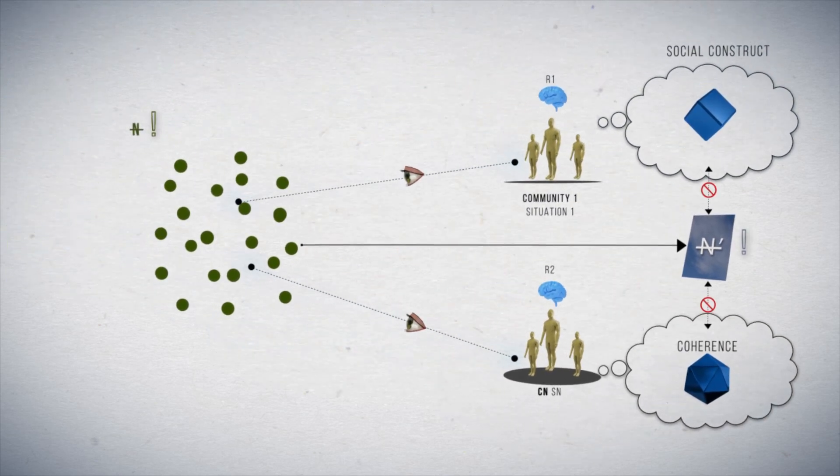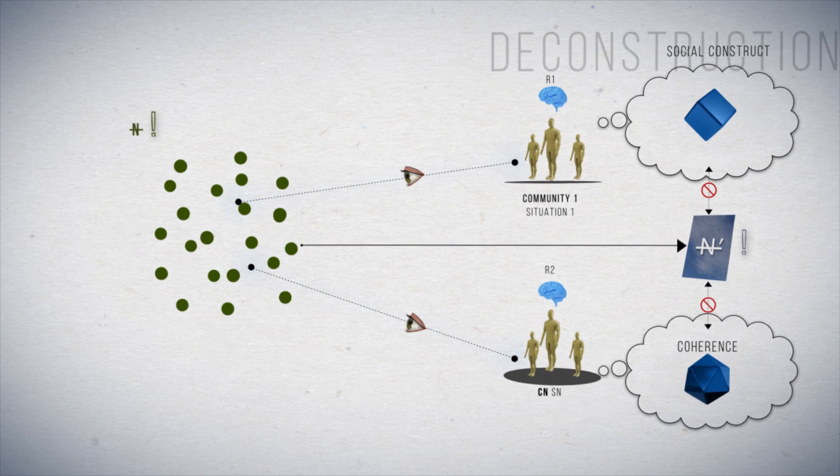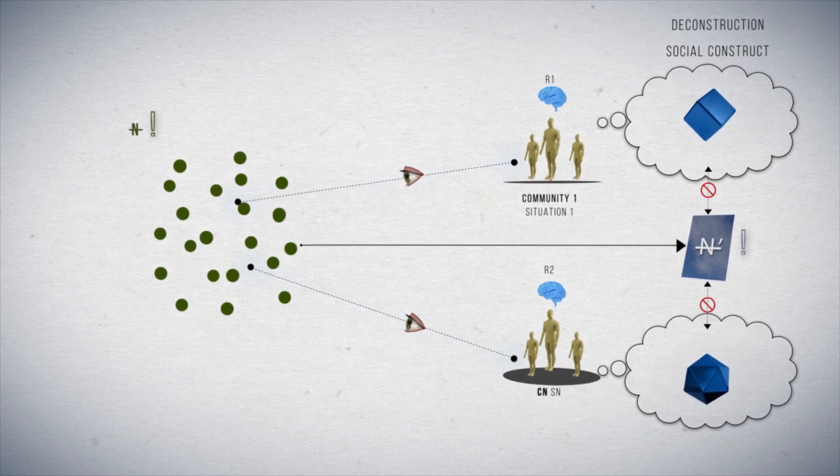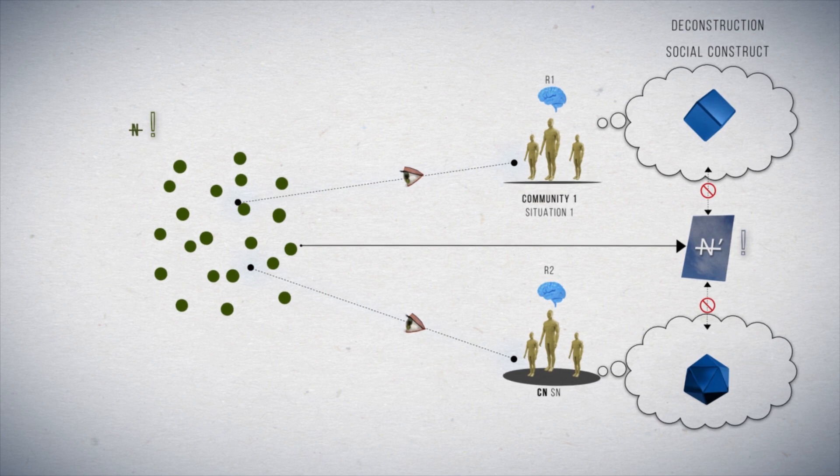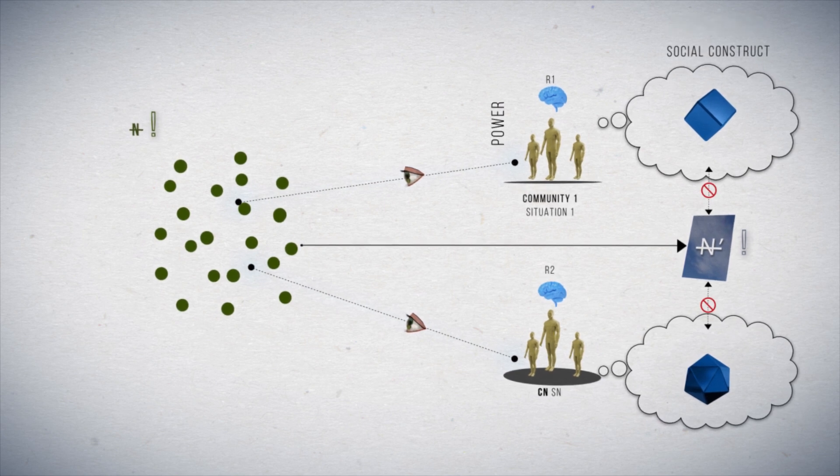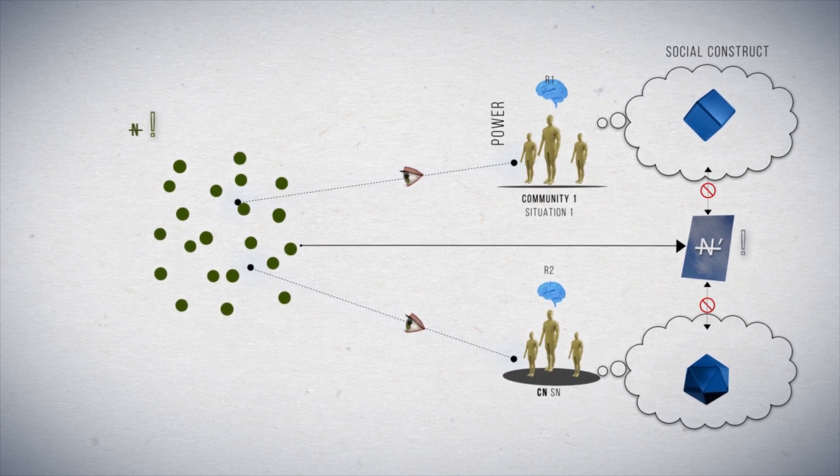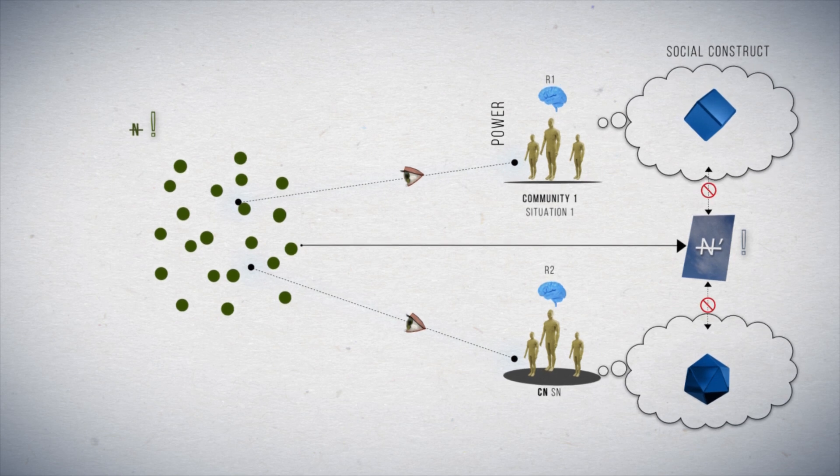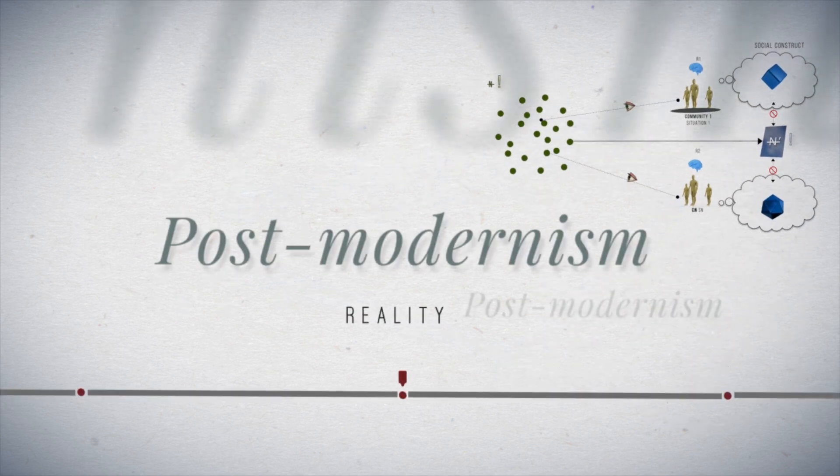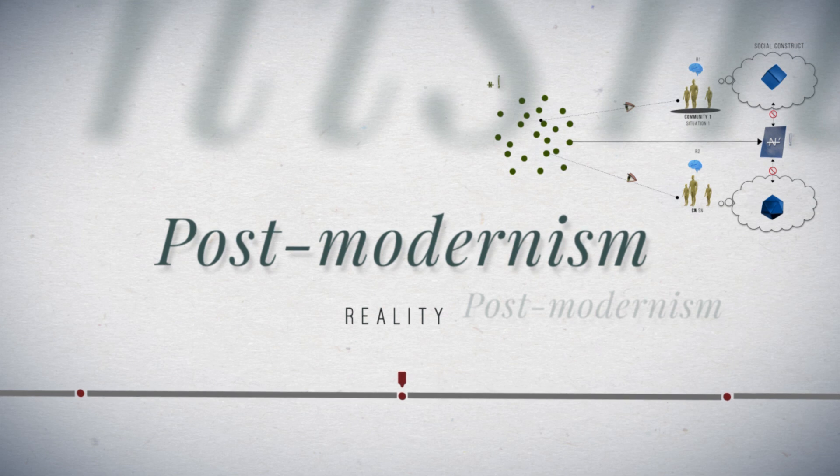Therefore, postmodernism proposed as its method the deconstruction of constructs through the denouncement of the power relations, considered totalitarian, that lie behind the apparent coherence of each social construct. This is reality for postmodernism.